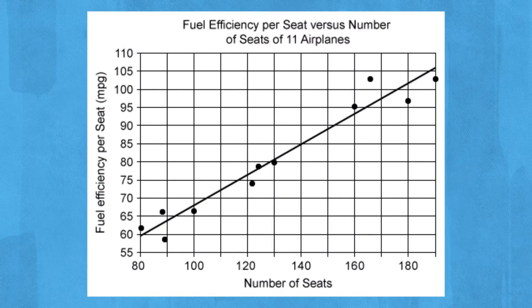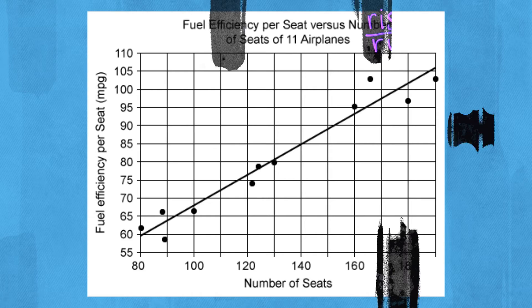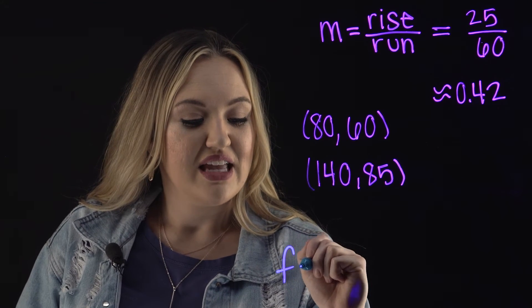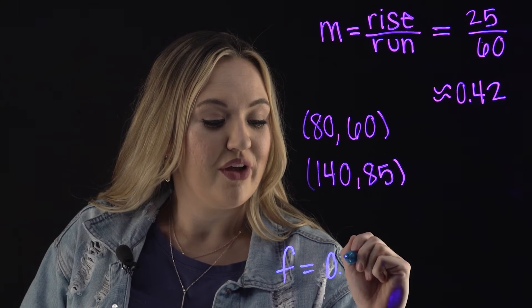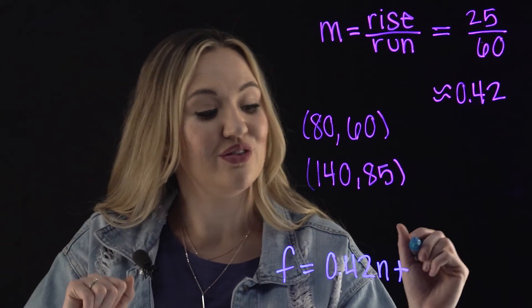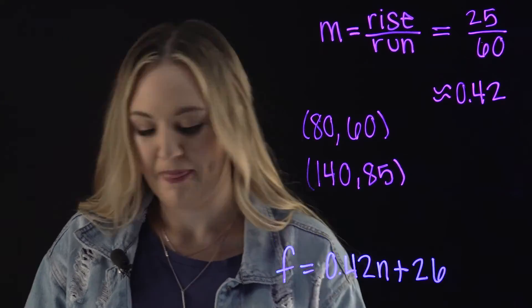If we kept tracing the line from n = 80 down to where n = 0, you would get a value much less than 60. And in this case, it would be 26. So the slope of the line of best fit in this case is F = 0.42n + 26, the y-intercept that we narrowed down to be 26.